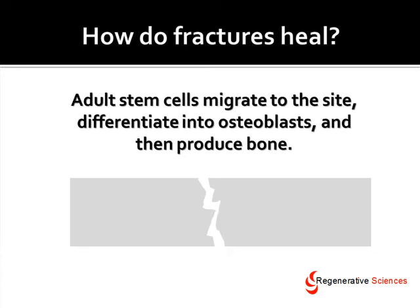Those stem cells go into the fracture site and turn into bone-producing cells, or osteoblasts. Those osteoblasts produce bone to heal up the site. What's also necessary is a good blood supply to the area, good nutrient supply, and good stem cells — certainly enough stem cells to make the repair possible.